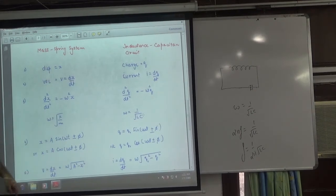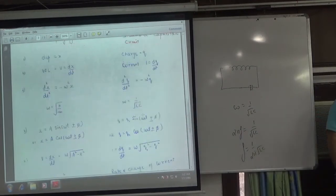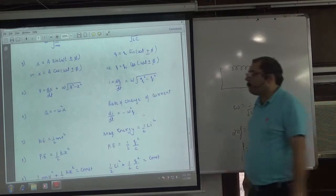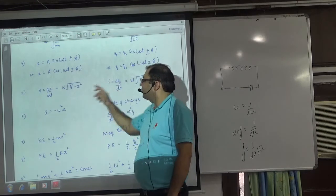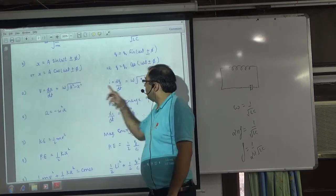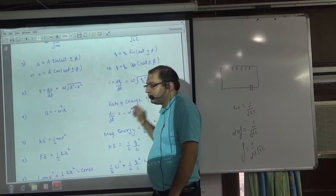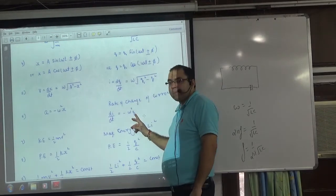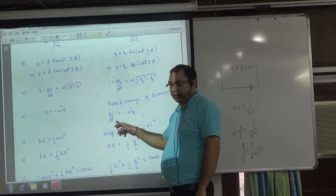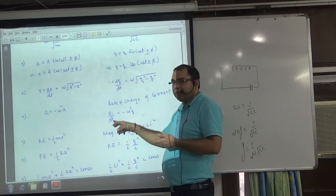SHM charge equation, sine or cos. Velocity formula omega under root of a square minus x square. X is charge, v is i. Amplitude maximum x is charge. Acceleration minus omega square x. X is charge and acceleration di by dt. Dv by dt is a, di by dt.